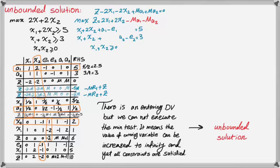So there is an entering decision variable, but we cannot execute the minimum test. That means the value of entering decision variable can be increased to infinity and yet all the constraints be satisfied. So this condition is called unbounded solution. So the sign for an unbounded solution in your simplex table is as simple as that. You'll have the most negative value in a maximization problem and you try to enter the basis, but you cannot because you cannot implement the minimum test.